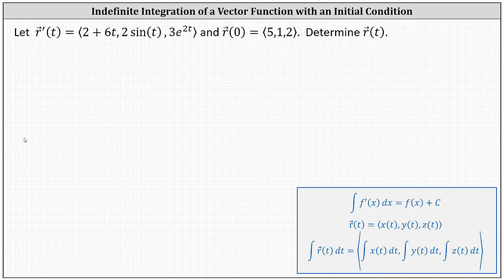We are given the derivative of the vector-valued function r of t, which has an x component of 2 plus 6t, a y component of 2 sine t, and a z component of 3 e to the 2t. We're also given that r of 0 equals the vector 5, 1, 2. We're asked to determine the vector-valued function r of t.